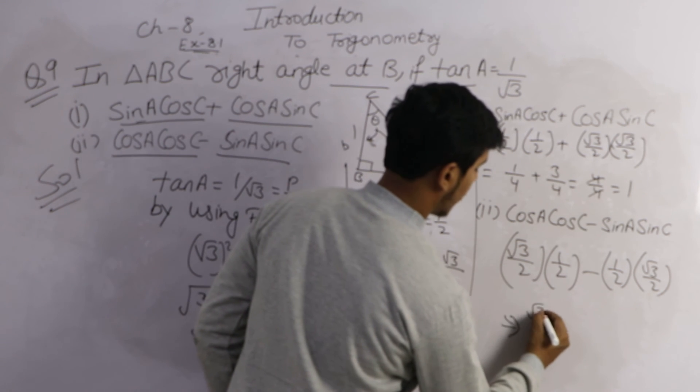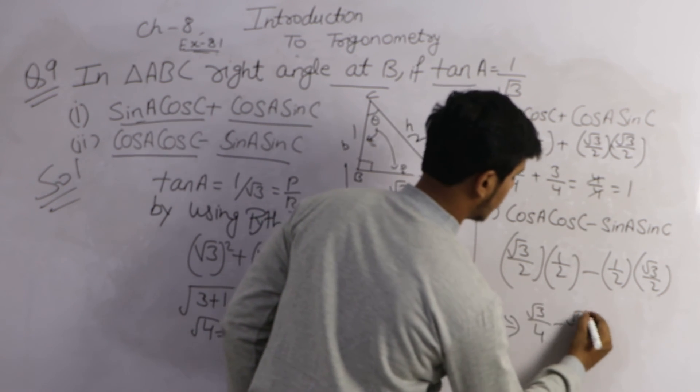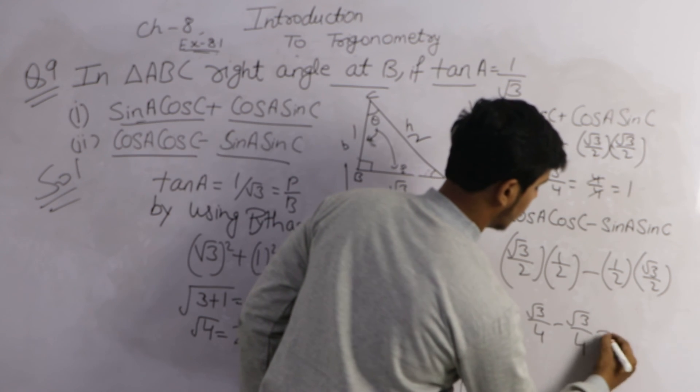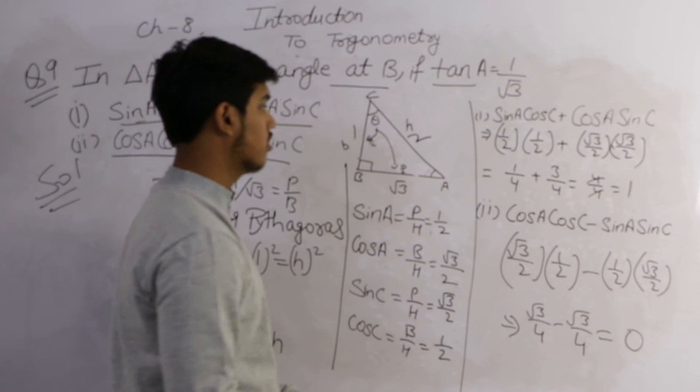So it comes root 3 by 4 minus root 3 by 4, which is equal to 0.